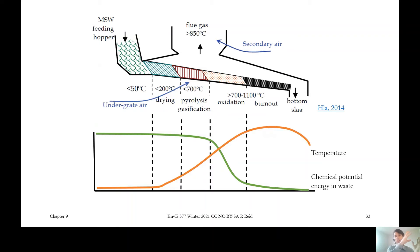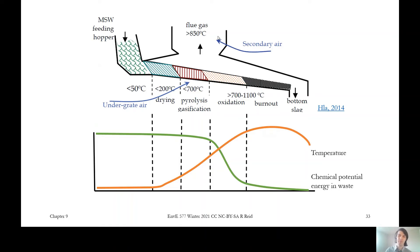A diagram shows what's happening as materials are charged into the combustion chamber and move through it. Wet waste comes in and the first stage is drying, using heat from already-burning waste to drive off water, which goes up in the flue gas. Next, pyrolysis and gasification of the solid material occurs. Once a critical mass of flammable vapors builds up, oxidation begins. Under-grate air is supplied mainly to cool the grates but also supports gasification, while secondary air from above burns out all the flammable gases coming off the waste.